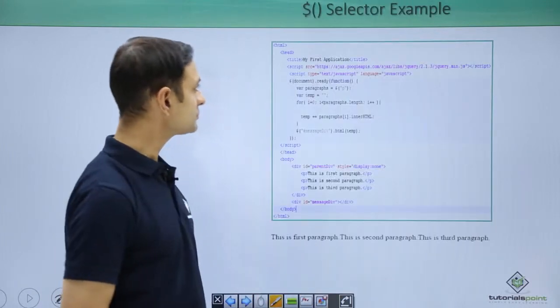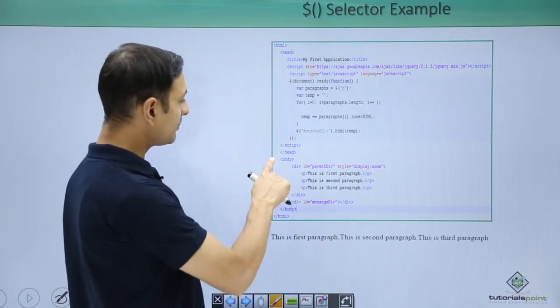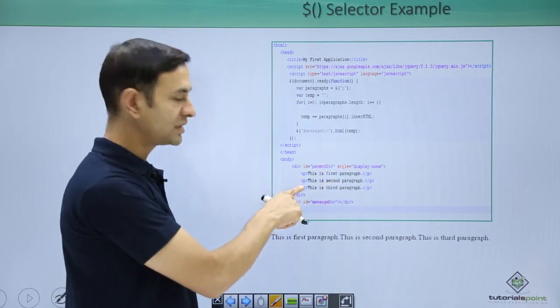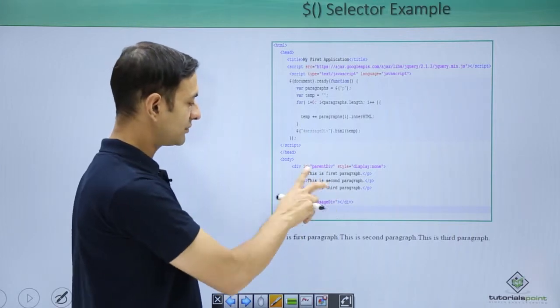Let us see the examples. Here what we are doing, we are having a parent structure like this: div, parent div, display none. We have three paragraphs: this is my first paragraph, this is my second paragraph, this is my third paragraph. Done.